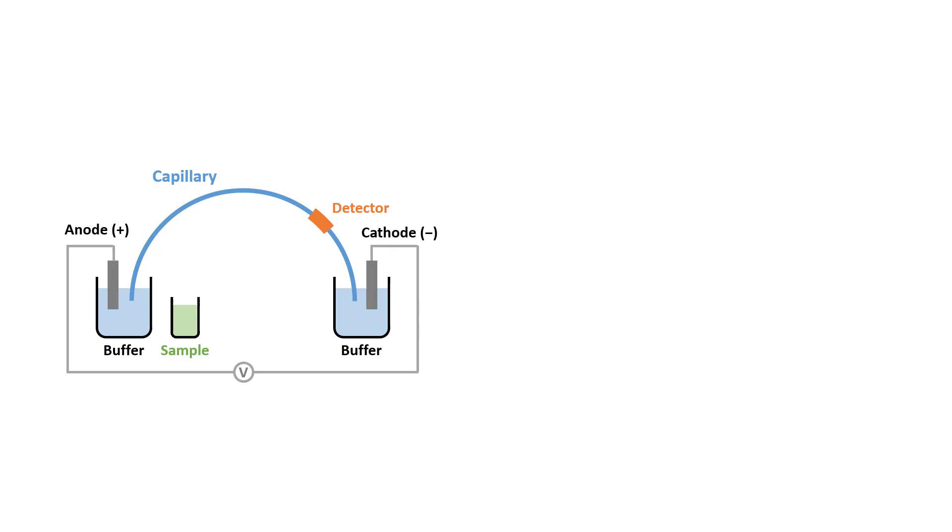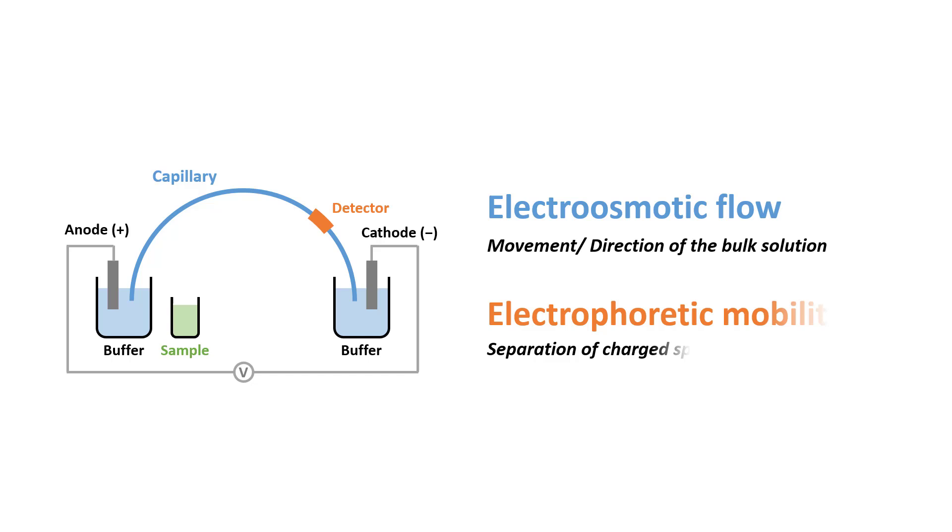In order to understand how capillary electrophoresis works, we need to take a look at two key mechanisms. The first mechanism is the electroosmotic flow, which governs the movement or the direction of the bulk solution in the capillary. The second mechanism is the electrophoretic mobility, which is responsible for the separation of charged species in the solution. First of all, let's take a look at the electroosmotic flow.